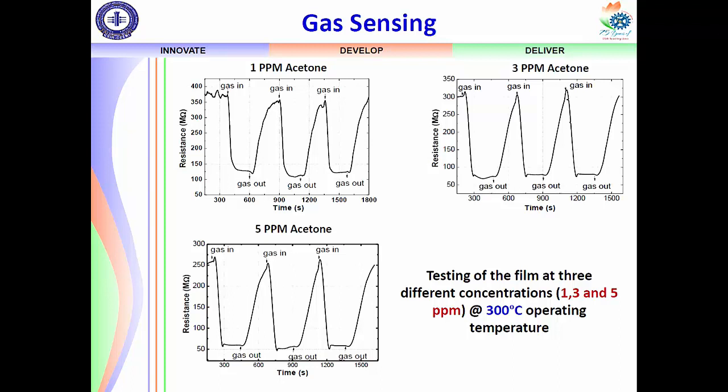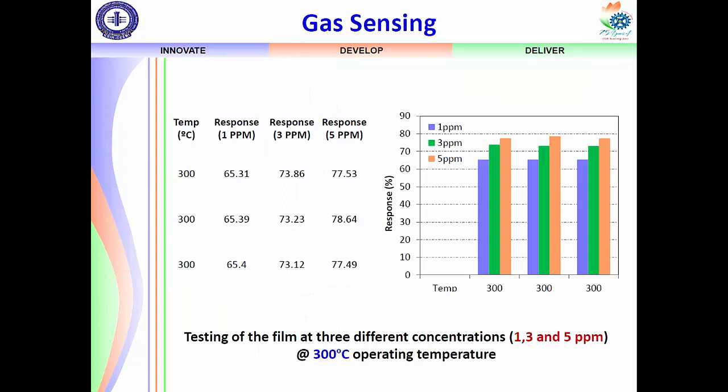The response is very good — 60 to 70 percent response for 1 ppm, which indicates a very sensitive film. The results for all concentrations and their responses are summarized in one table. There are 3 cycles for each concentration: 1 ppm tested 3 times, 3 ppm 3 times, and 5 ppm 3 times, to verify repeatability of the device.